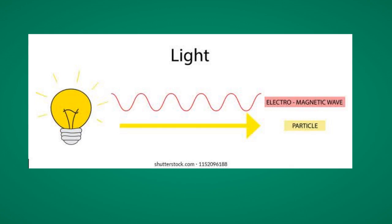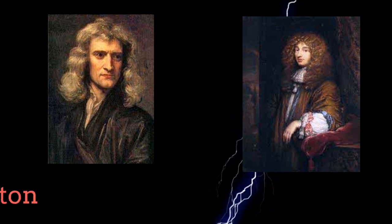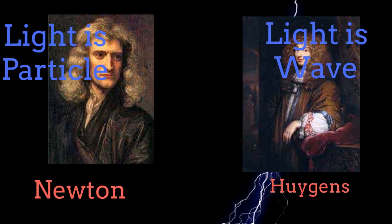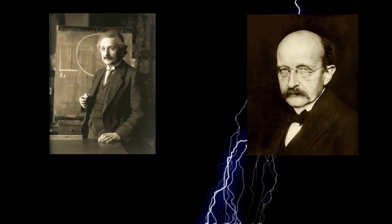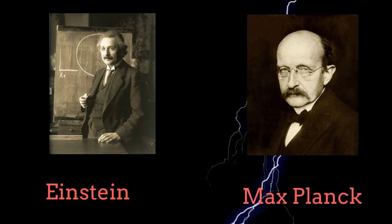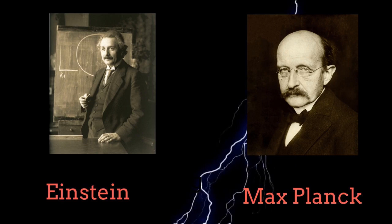One example of wave-particle duality can be perceived with light — both wave and particle. In the past, there were strong debates about the nature of light: Newton believed that light was a bunch of particles, while Huygens believed that light was a wave. Thanks to Einstein and Max Planck, it was later understood that light is both wave and particle — and not only light, but radiation in general.